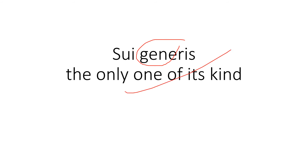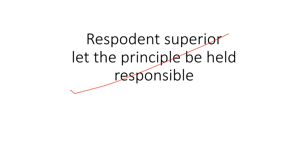'Respondeat superior' means let the principal be held liable — also called the master-servant relationship. When you solve legal principle questions in entrance examinations, you come across this concept: if a servant commits a wrong while under the order of his master, the master will be held liable, not the servant, because the act was done under the master's order. That is respondeat superior.